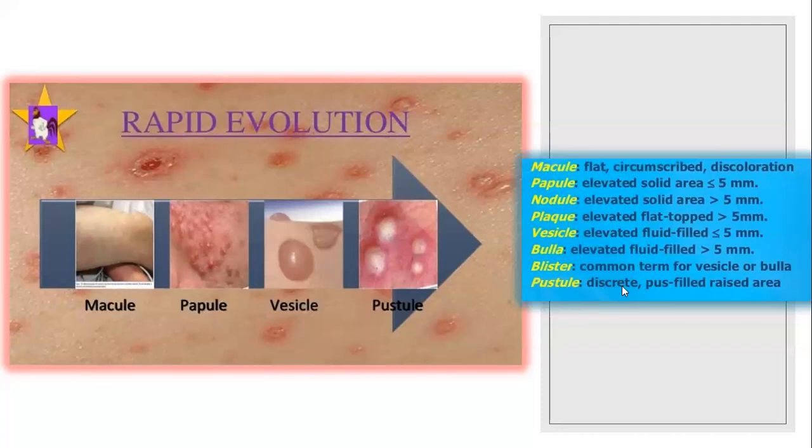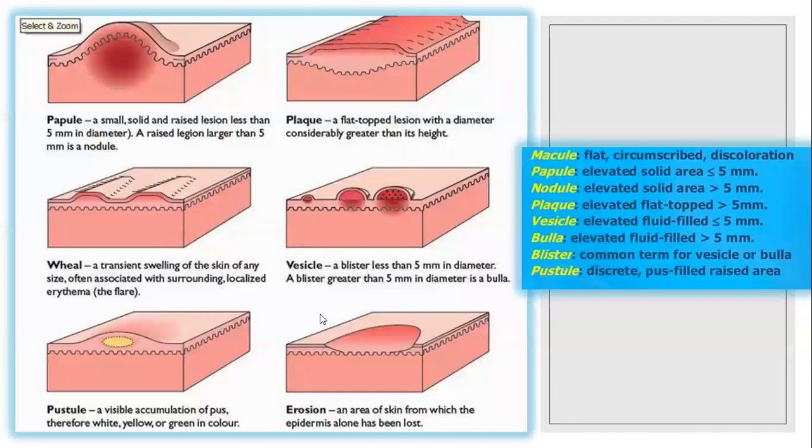If it is pus-filled, you see this pus, raised area, we call it pustule. It is distributed in a dermatological pattern which progresses into vesicle, pustule, or crust if untreated. Second picture showing: papules are small, solid, and raised, but less than 5mm.